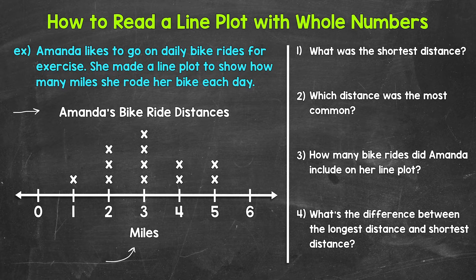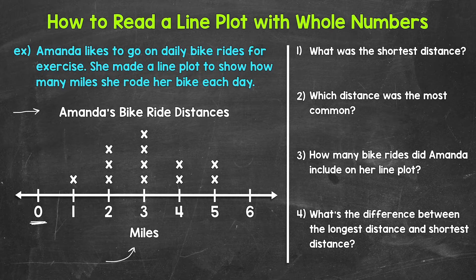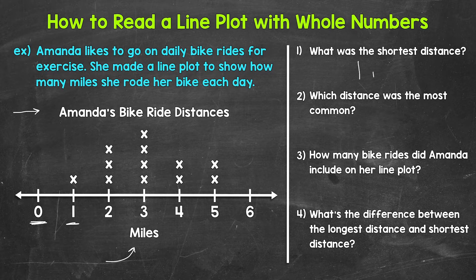Let's jump into question one: what was the shortest distance? We need to look for the smallest number in value on the number line with at least one X above it. Be careful — some line plots have a number line that starts before the X's start. Don't just automatically pick the smallest number. Zero is on the number line but has no X's above it, so Amanda didn't ride zero miles. Her shortest bike ride was one mile, with one X above one.